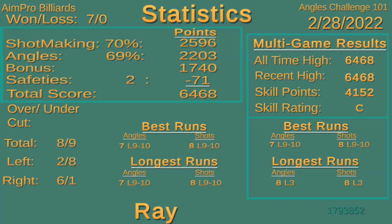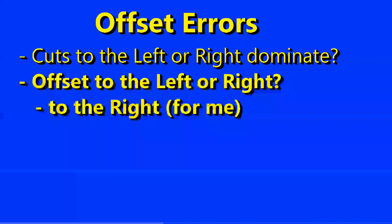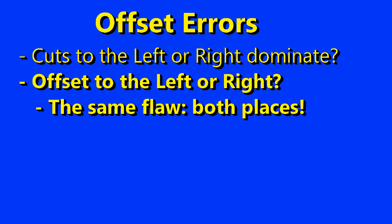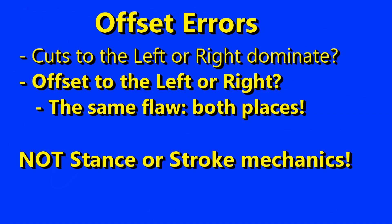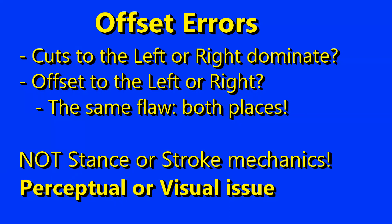The pattern was that on cuts to the right, overcuts predominated; on cuts to the left, undercuts predominated. This is a pattern of consistently hitting offset to the right. Then I realized that in shooting spot shots on the practice table, I had previously noted the same pattern of misses, but struggled to fix it because I didn't know the cause. The same flaw appearing in both the computer game and on the table means it's not a stroke, stance, grip, or elbow problem, but is some type of perceptual or visual issue. And I should be able to learn to overcome it at home with the Angles Challenge game.